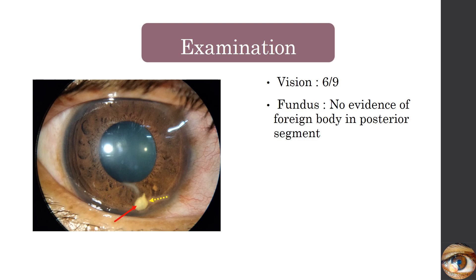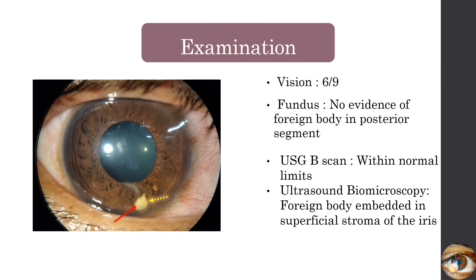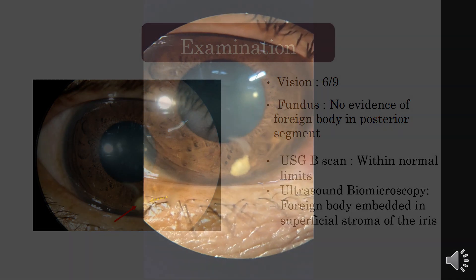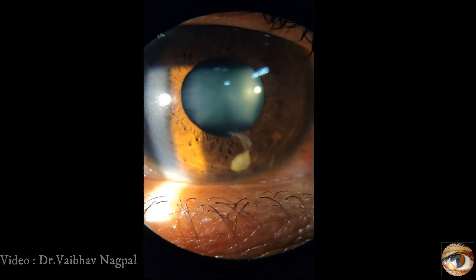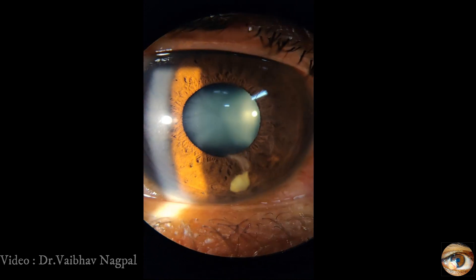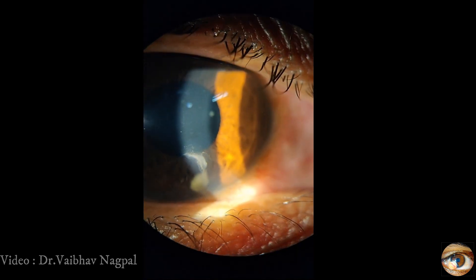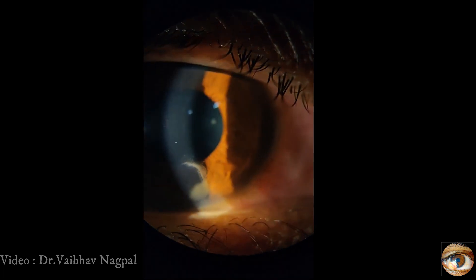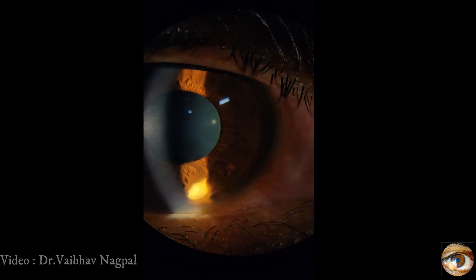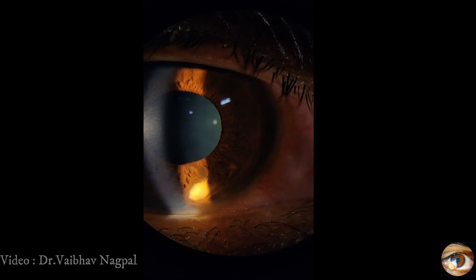A foreign body was found over the iris and the fundus examination was within normal limits. Ultrasound biomicroscopy showed that the foreign body was embedded in the superficial stroma. On slit lamp examination, we could appreciate that the chamber was well formed, there was a self-sealed corneal wound, and there was some fibrinous reaction over the foreign body.